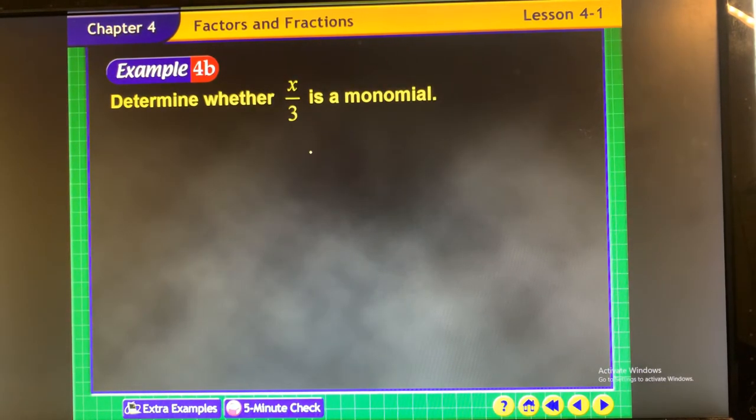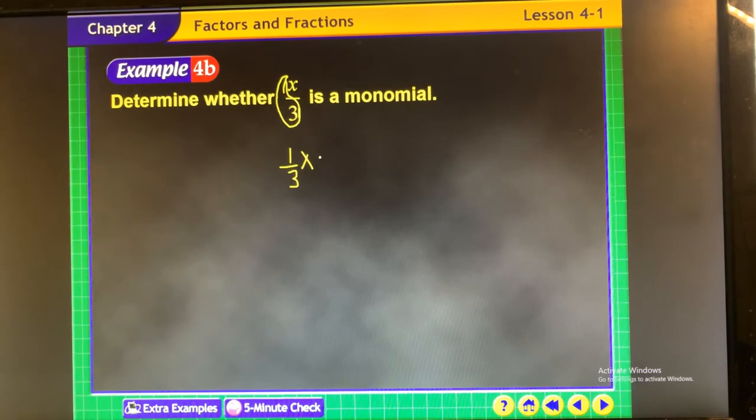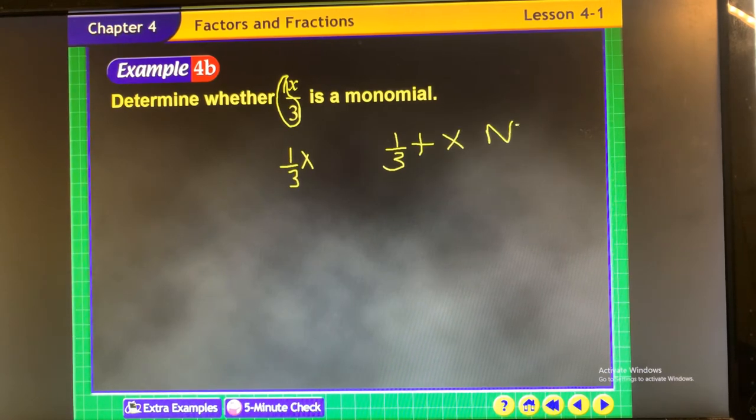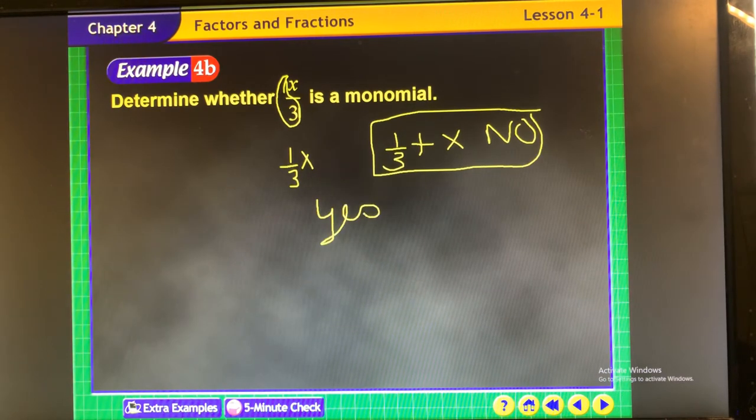Is x divided by 3 a monomial? Yeah, it's a monomial. It's only one term. The coefficient is one-third x. See, remember, there's always a 1 by the x. So the coefficient, remember, is the numerical value next to the variable. So if I pull this away, it becomes one-third x. And remember, if there's no symbol, it means multiplication. To be a term, it has to be separated by an addition sign. If it was one-third plus x, the answer would be no. But it's one-third times x, so this one is yes. It is a monomial, one term.